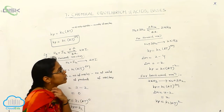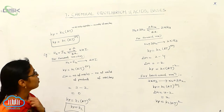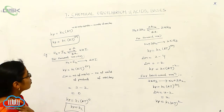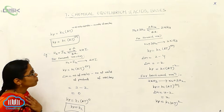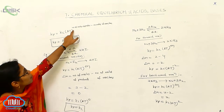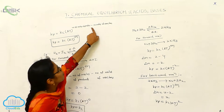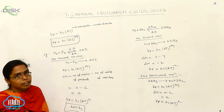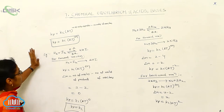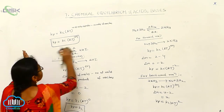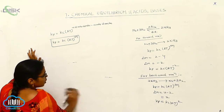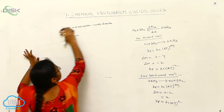So, it is the relationship between Kp and Kc for different types of examples. Delta N is nothing but the number of moles of products minus the number of moles of reactants. This is the information about Kp and Kc.